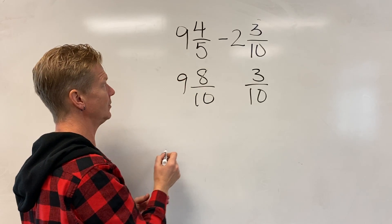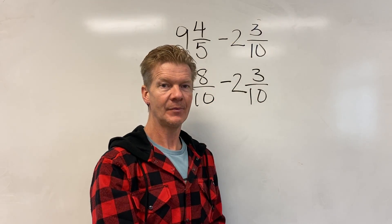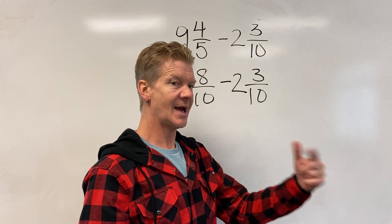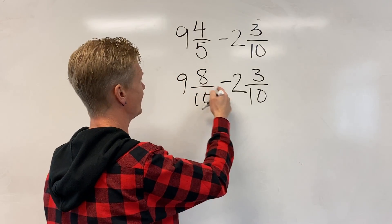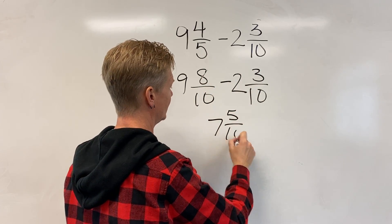Happy little whole numbers, just leave them alone. This is subtraction, that's an important part. So instead of adding the wholes and adding the numerator, I'm going to subtract them. 9 minus 2 is 7, 8 minus 3 is 5 tenths.